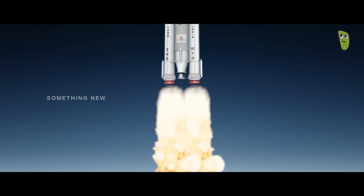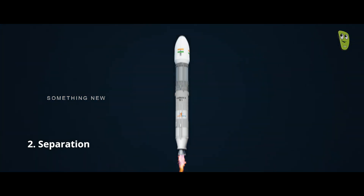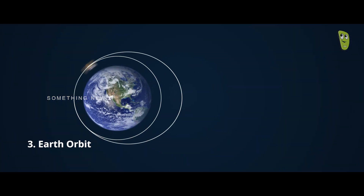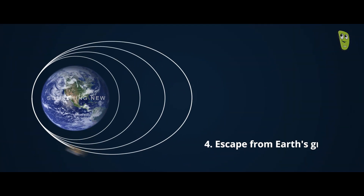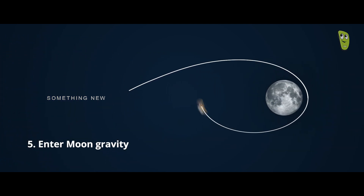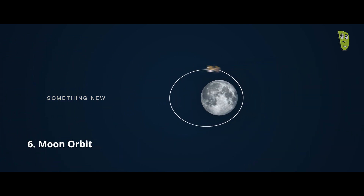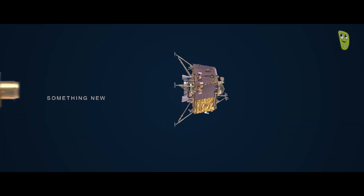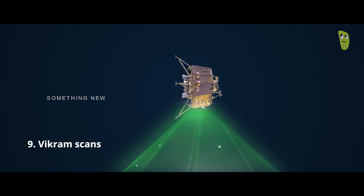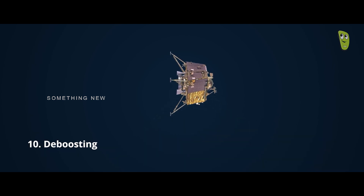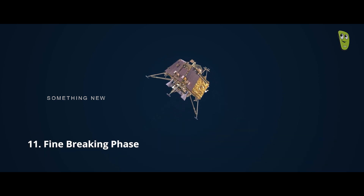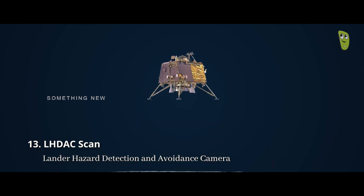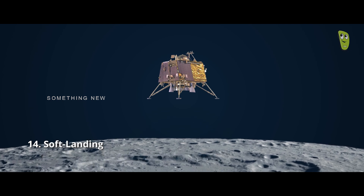The 15 key stages are: 1. Liftoff, 2. Separation, 3. Earth orbit, 4. Escape from Earth's gravity, 5. Enter moon gravity, 6. Moon orbit, 7. Vikram separates from the orbiter, 8. Vikram re-orbits, 9. Vikram scans, 10. Deboosting, 11. Fine braking phase, 12. Vertical descent, 13. LHDAC scan, 14. Soft landing.